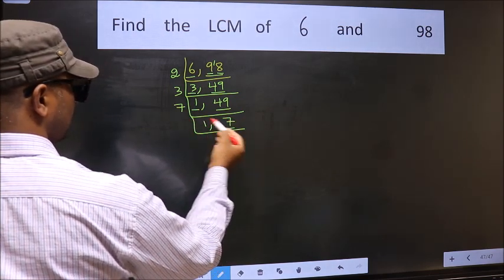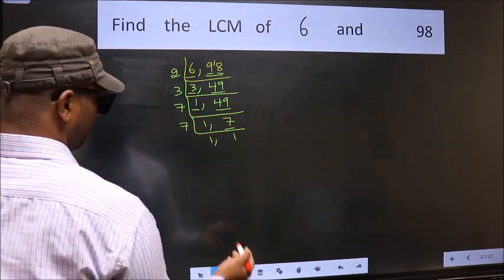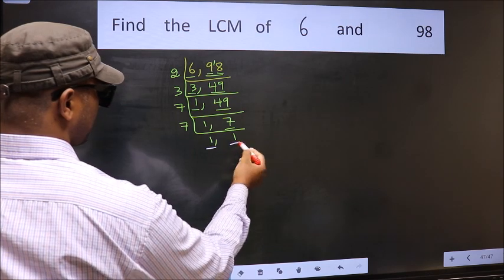Now we got 7 here, so 7 is a prime number, so 7, 1 is 7. We got 1 in both the places.